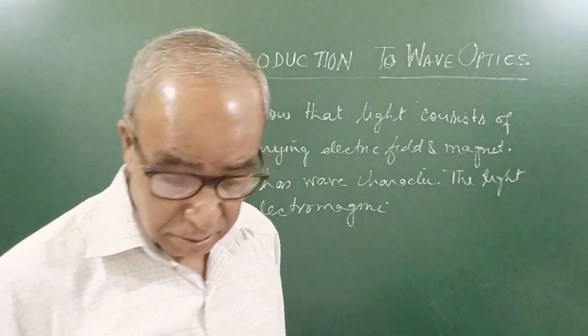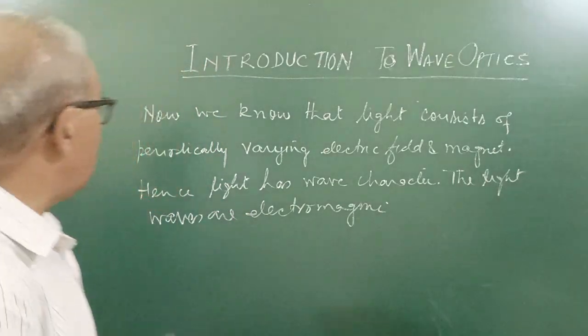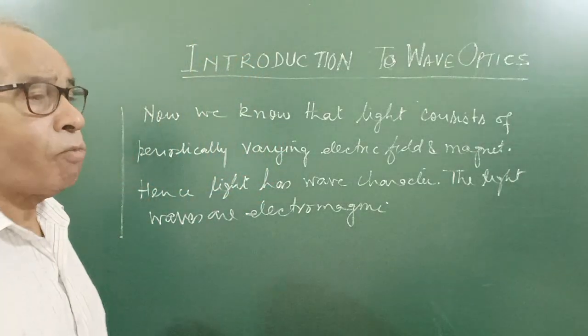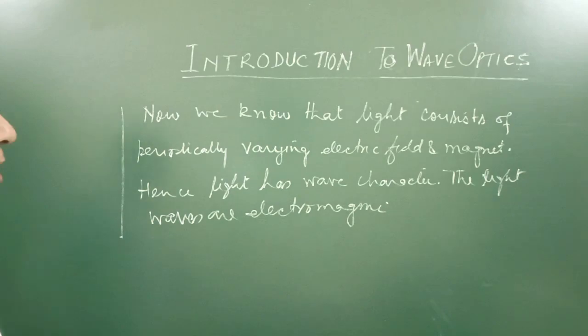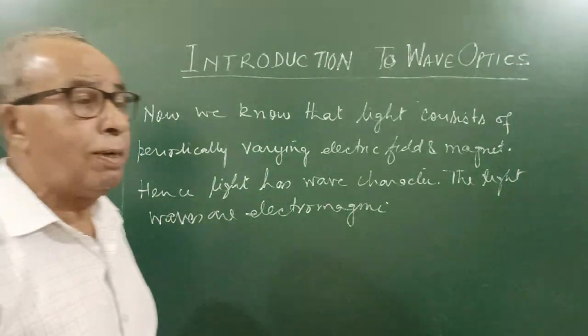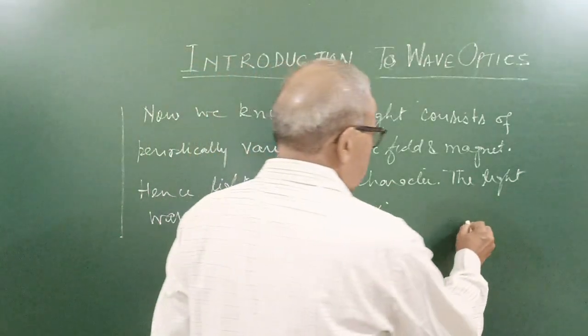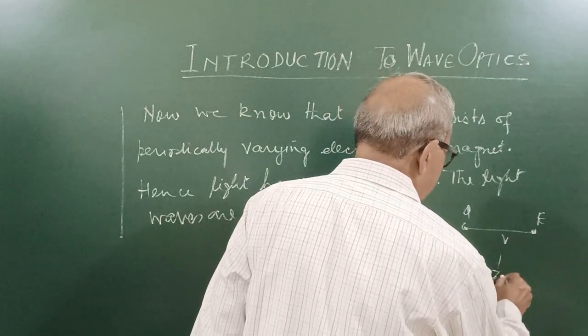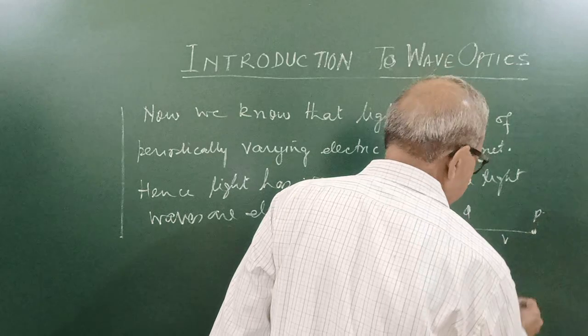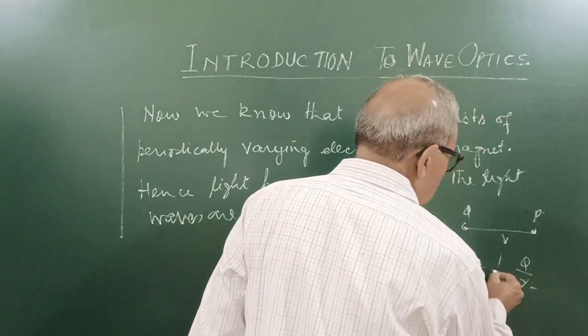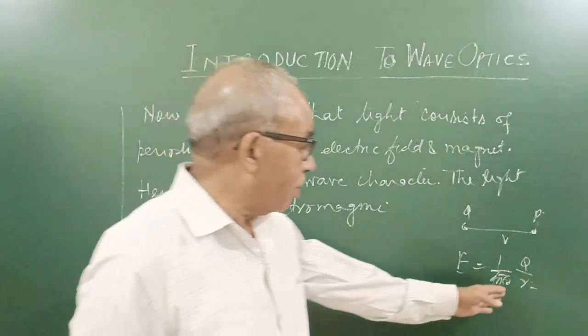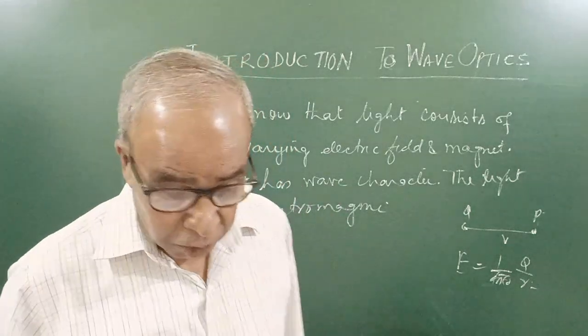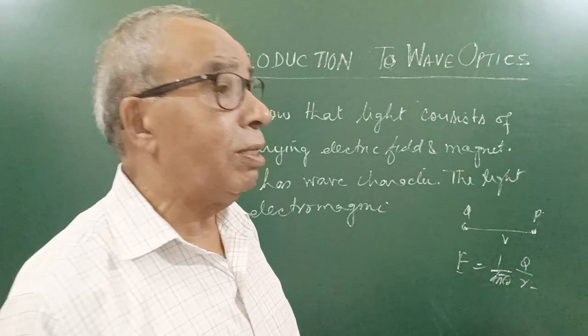That is wave character, nothing else. But don't forget—now we know it—Maxwell and Einstein, there are many experiments which prove that light waves do not require medium. Electrical fields can exist in free space. You know if there is a point charge Q, then electrical field at distance r is E = 1/(4πε₀) × Q/r². ε₀ is the electrical permittivity of free space. Empty space—electrical and magnetic fields can exist. So light waves do not require medium. We know it now.